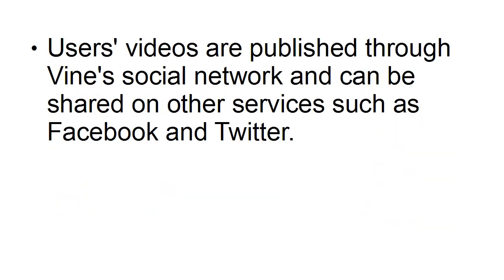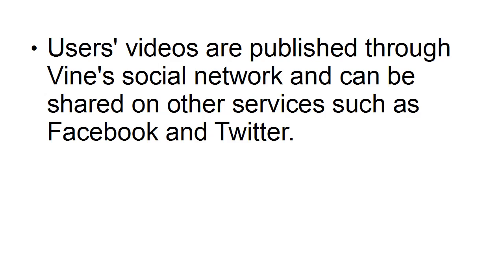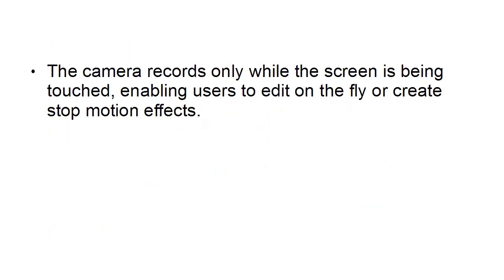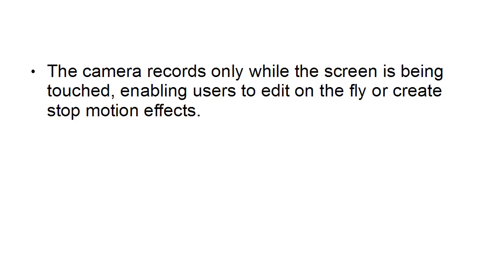Users' videos are published through Vine's social network and can be shared on other services such as Facebook and Twitter. Vine's app can also be used to browse through videos posted by other users. When you're using Vine, the camera only records while the screen is being touched, and this enables users to edit on the fly or create stop-motion effects. Additional features added in July 2013 include grid and ghost image tools for the camera, curated channels with themed areas and trending topics or users, protected posts, and the ability to re-Vine videos on a personal stream.